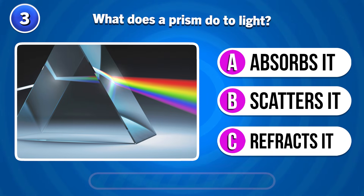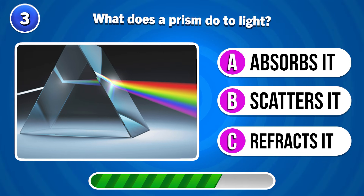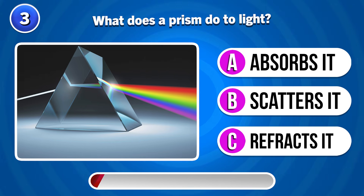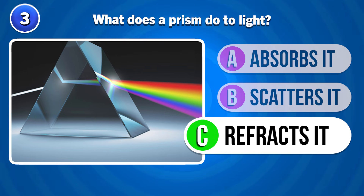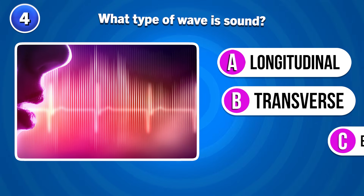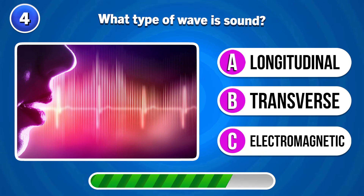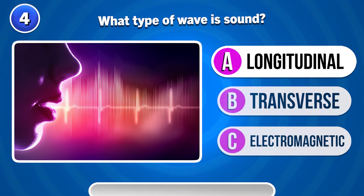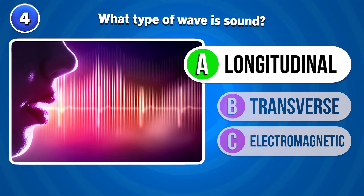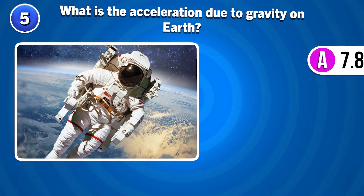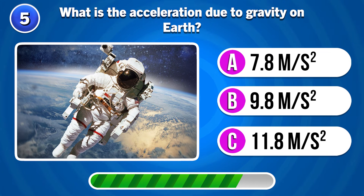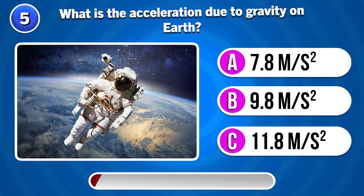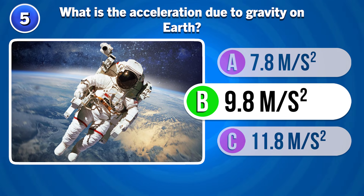What does the prism do to light? Refracts it. What type of wave is sound? Longitudinal. What is the acceleration due to gravity on Earth? 9.8 meters per second squared.